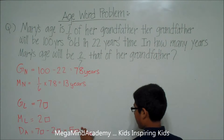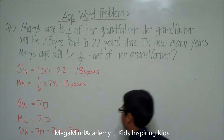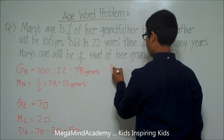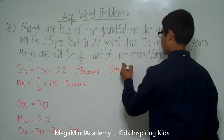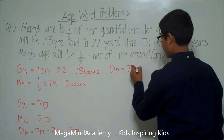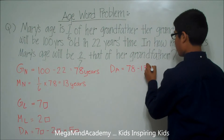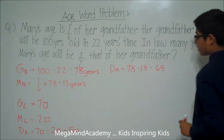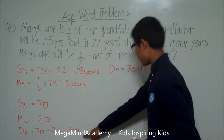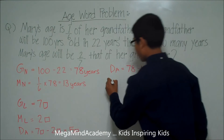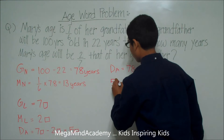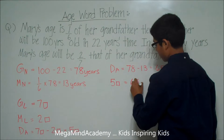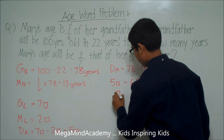The difference in age, D for difference, A for age, is equal to 78 minus 13, which is equal to 65. So this means that five units is equal to 65 years. Five units is equal to 65, so one unit is equal to 13.